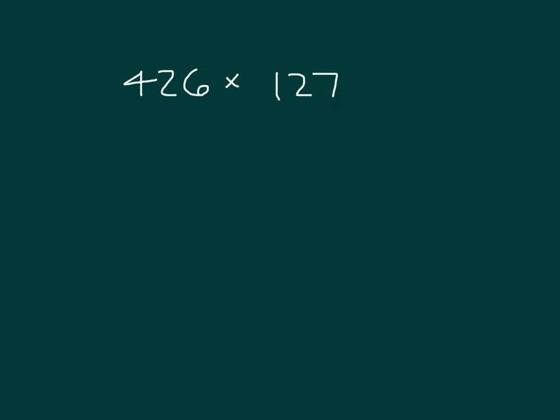Here we have 426 times 127. We are multiplying a 3-digit number by a 3-digit number. It's easier to count 127 units of 426 than 426 units of 127, so we'll set up our area model accordingly. This way we'll just have to multiply by 100, 20, and 7. There will be 3 columns and 3 rows.